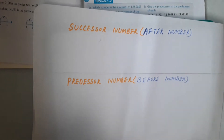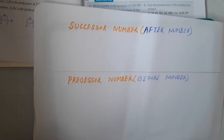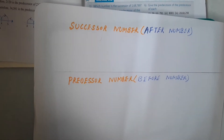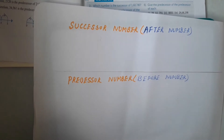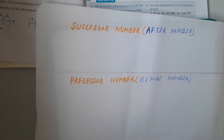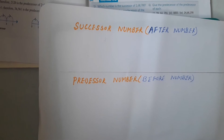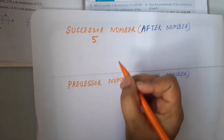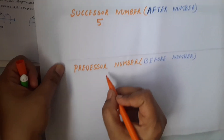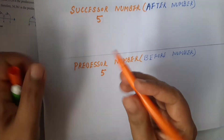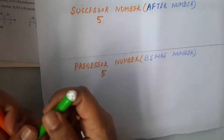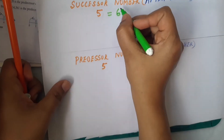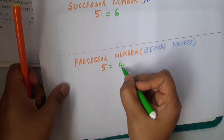Now, what is successor and predecessor? Successor means the number that comes after, and predecessor means the number that comes before. Successor means we have to add 1 to the given number, and predecessor means we have to subtract 1 from the given number. For example, after 5 comes 6, so the successor of 5 is 6. The predecessor of 5 is 4.